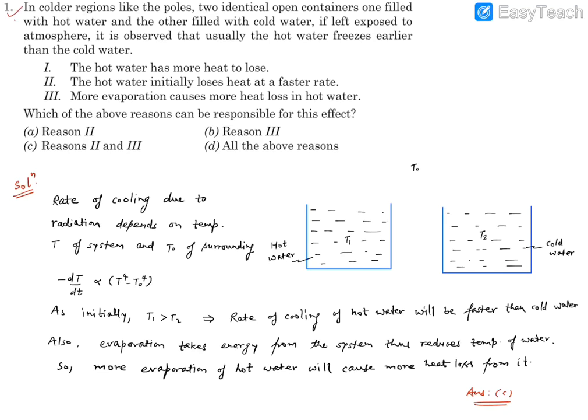Hello, question number 1. In colder regions like the poles, there are two identical open containers, one filled with hot water, another filled with cold water. They are left exposed to the atmosphere.